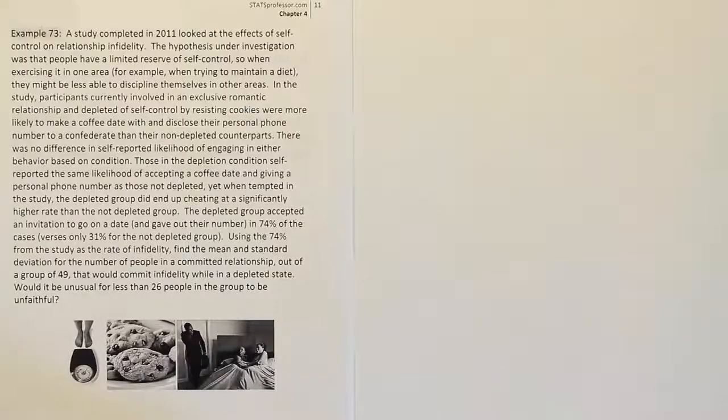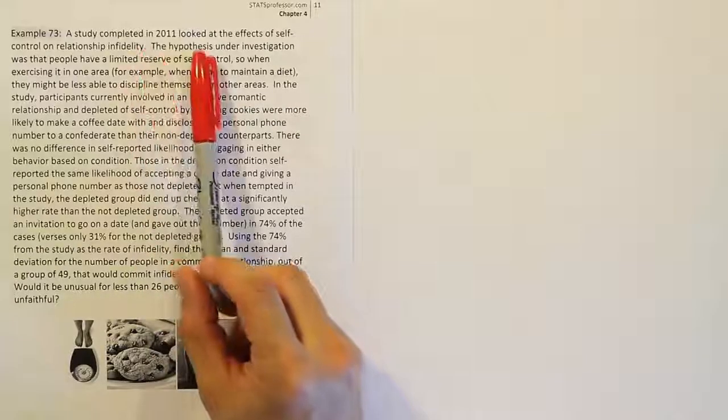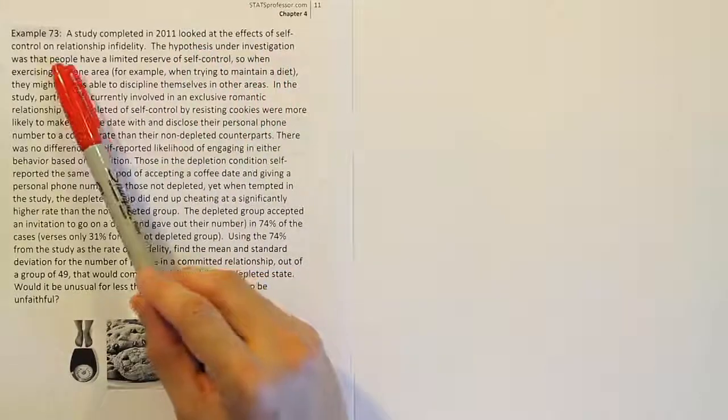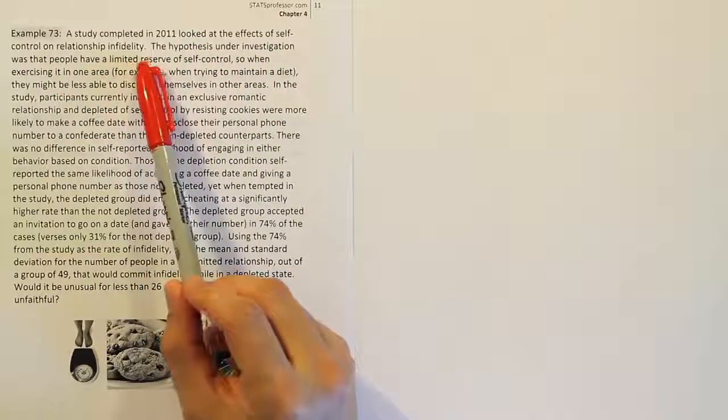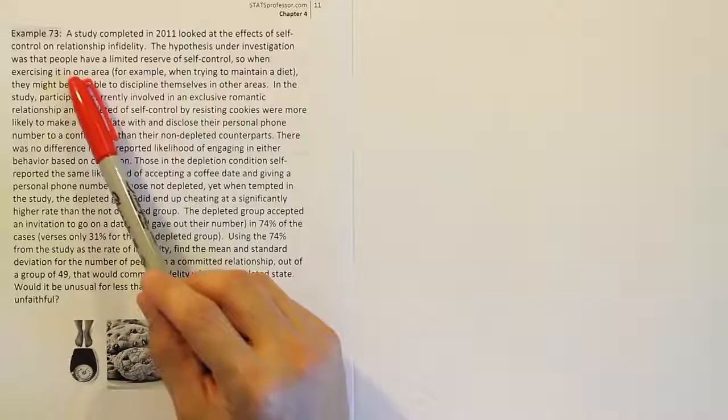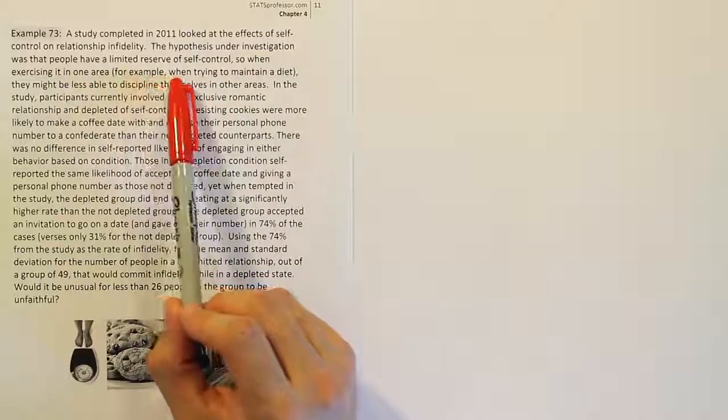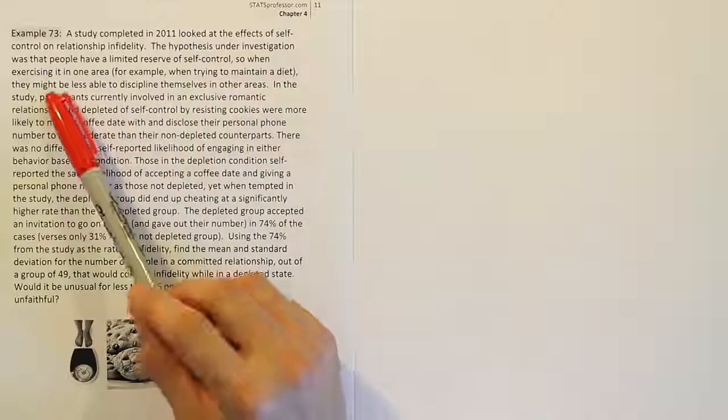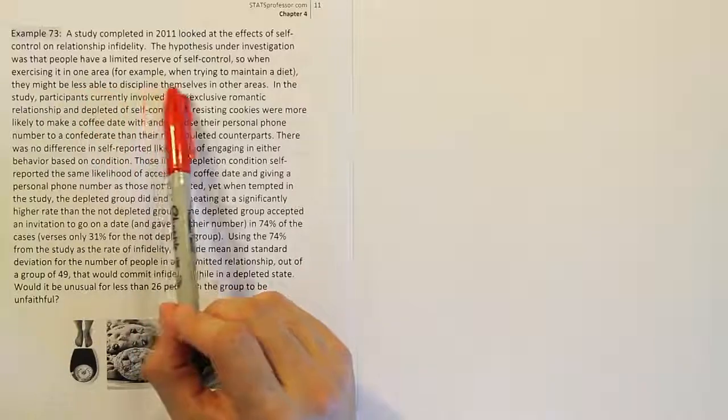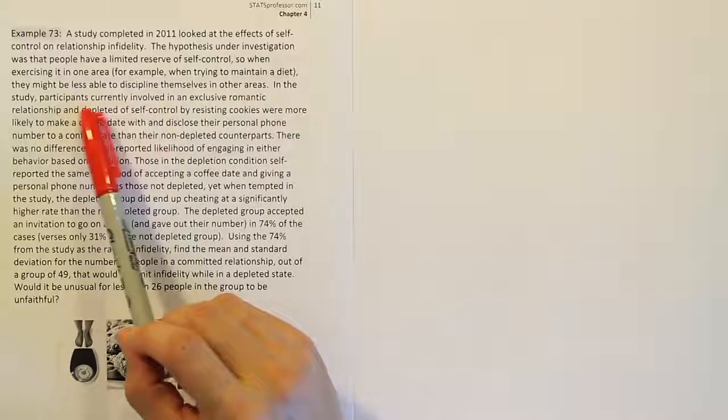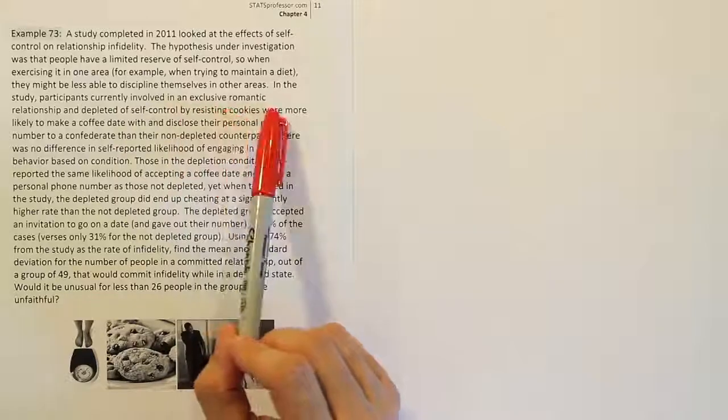Example 73. A study completed in 2011 looked at the effects of self-control on relationship infidelity. The hypothesis under investigation was that people have a limited reserve of self-control, so when exercising it in one area, for example when trying to maintain a diet, they might be less able to discipline themselves in other areas.